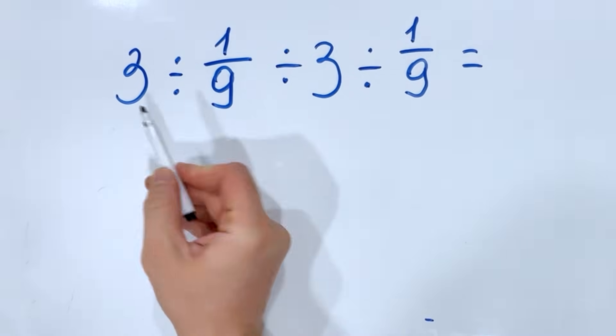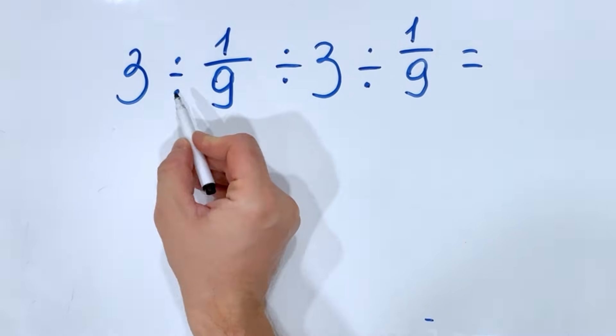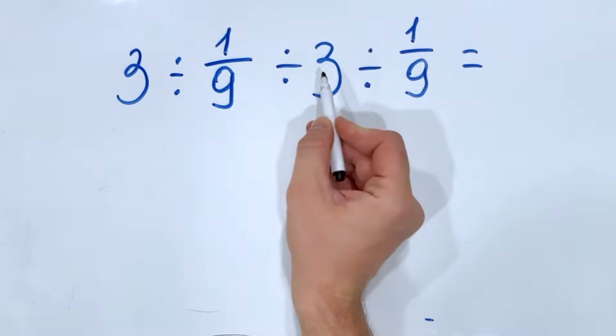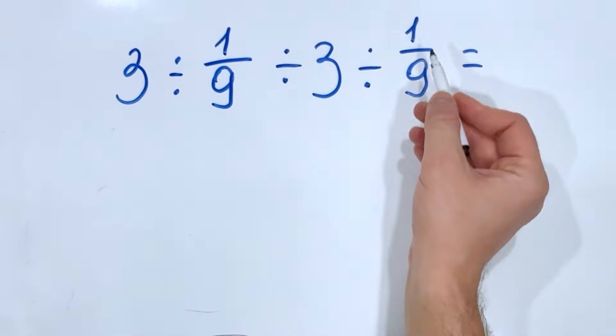Hello everyone! Today we have the following math problem: 3 divided by 1 over 9 divided by 3 and divided by 1 over 9.